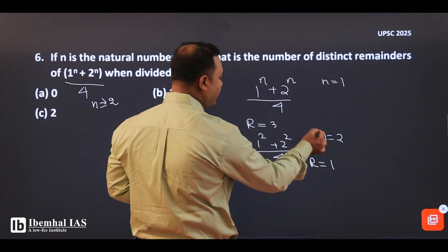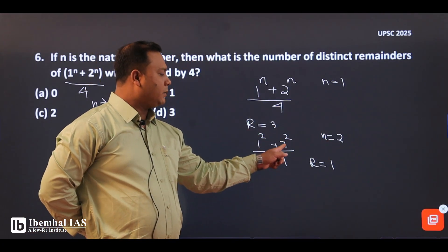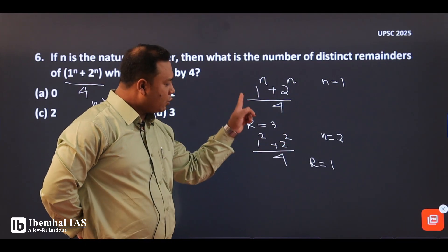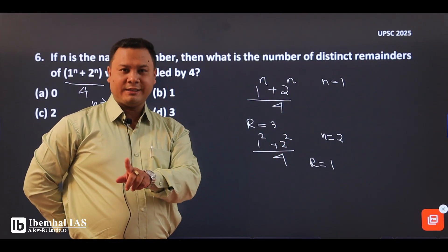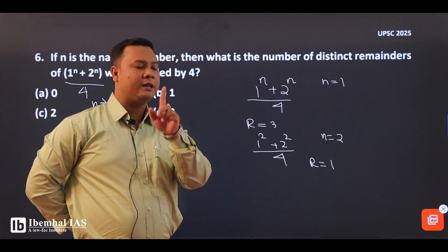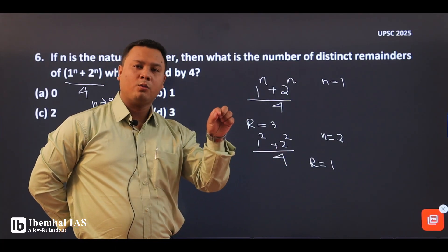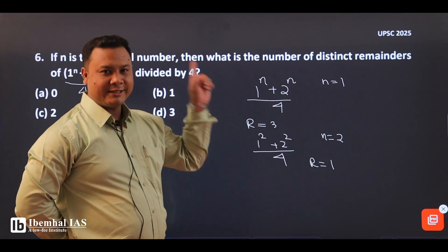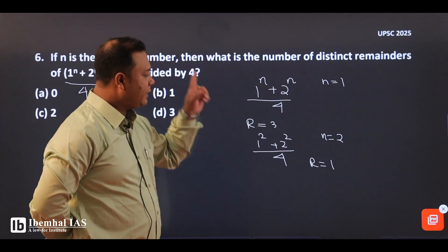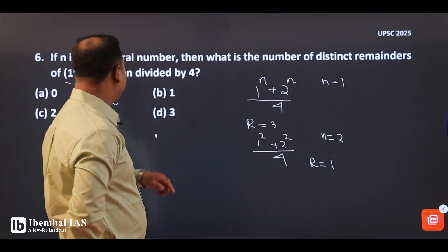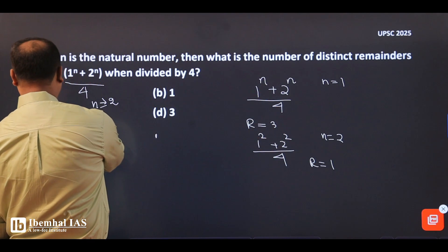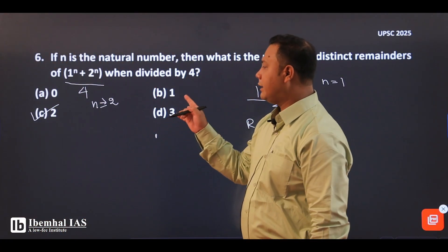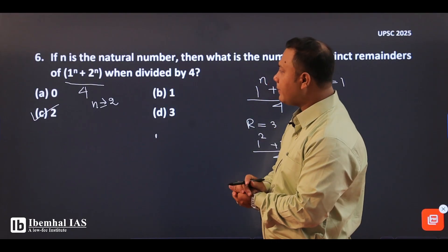For n=1, remainder; for n=3: 2 cubed gives 8. The remainder sequence gives 1, 1, 1, 1, 1. So the number of distinct remainders — the answer: there are 2 distinct remainders. Option number 2 is correct.